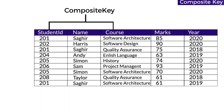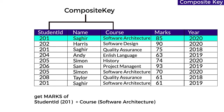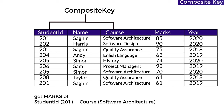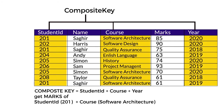A composite key is not only confined to two columns — there can be situations where there are more than two, like three or four. For example, a year column has been added to the table. The student 201 appeared in both 2020 and 2019 for the same software architecture exam, causing confusion. To clarify this, we make year a primary column as well. Now three columns — student ID, course, and year — are combinedly called the composite key. It will be easier to fetch: give us the marks of student ID 201, software architecture, in the year 2019, which is 61.